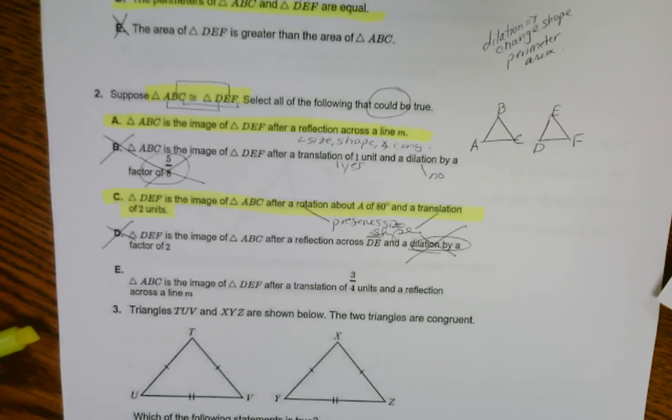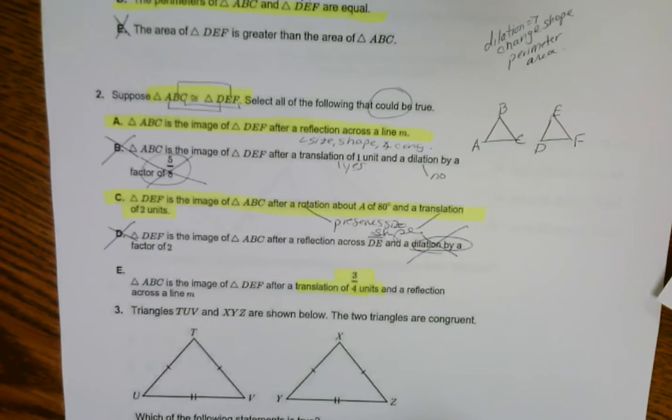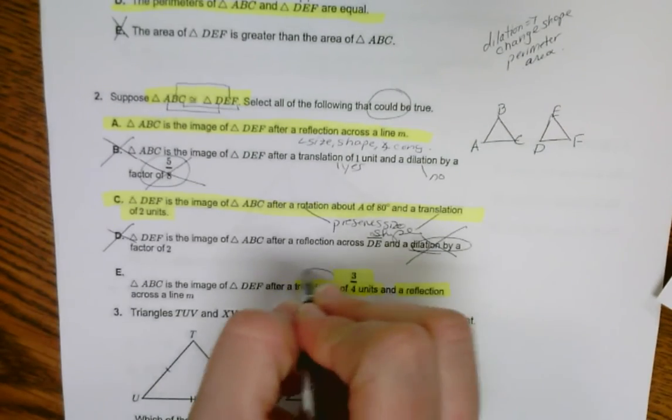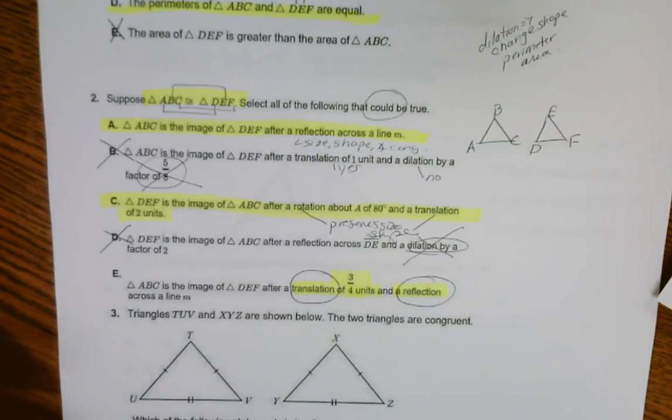ABC is the image after a translation. See, this is tricky. You see the three-fourths and you're like, oh, it's a dilation, but it's three-fourths of a unit. And here's the reflection. Because of the word translation and reflection, again, size and shape is preserved.